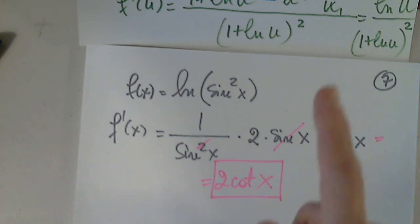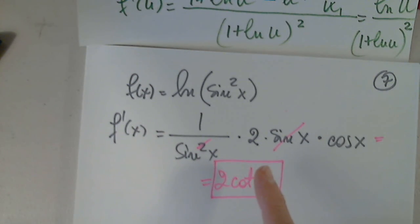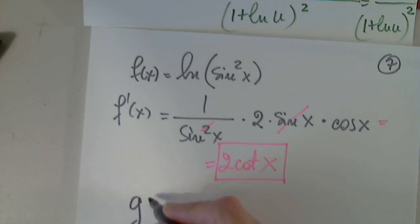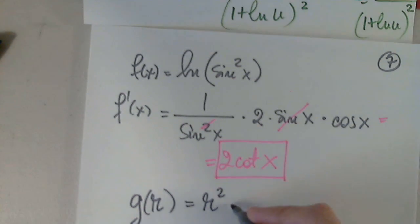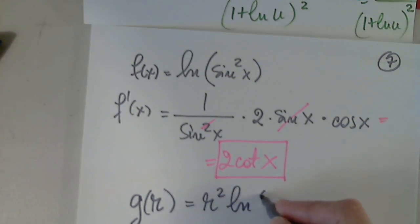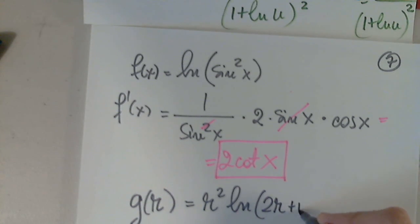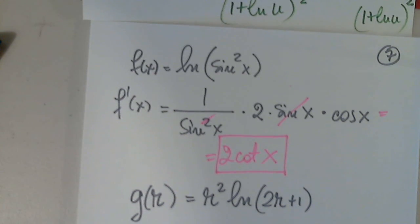We've looked at the quotient rule and function composition. Let's also look at the product rule with G(R). Any questions before we move on?